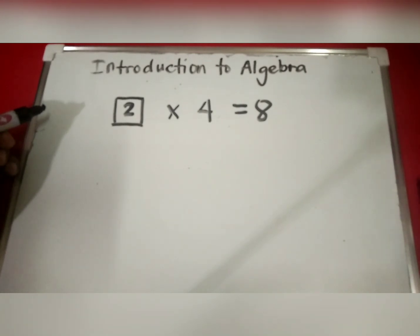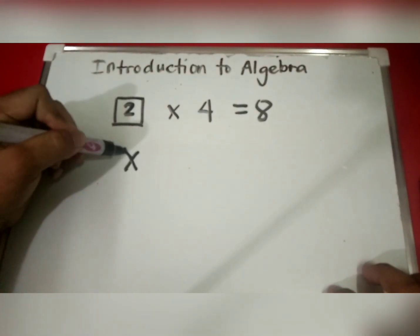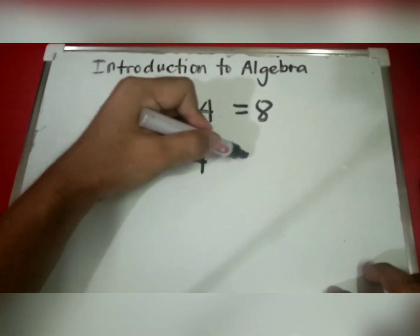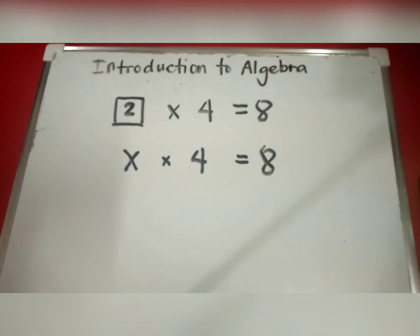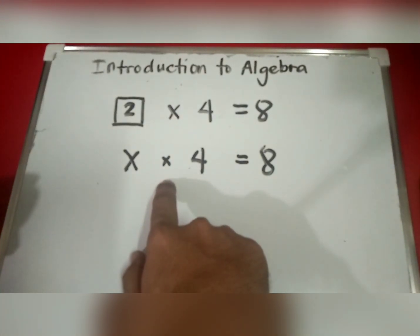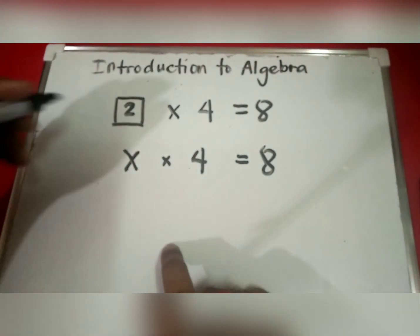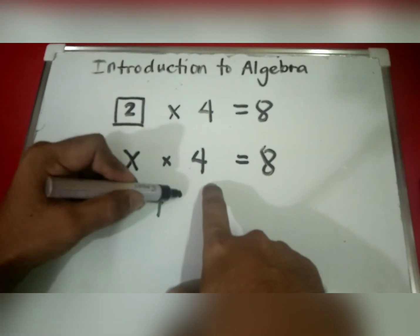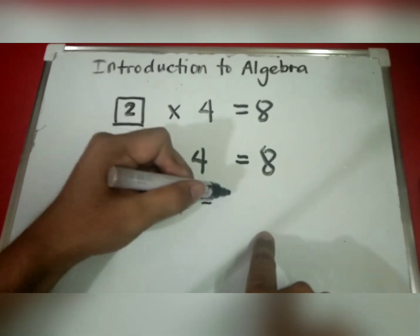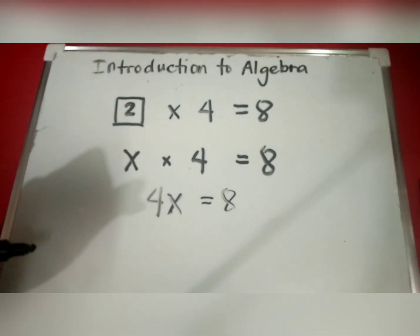Well, in algebra we don't use blank boxes — we use a letter. So we can write x times 4 equals 8. But the x looks like the multiplication symbol, which can be very confusing. So in algebra, we don't use the multiplication symbol between numbers and letters; we put the number next to the letter to mean multiply. So 4 times x is written as 4x, which equals 8.